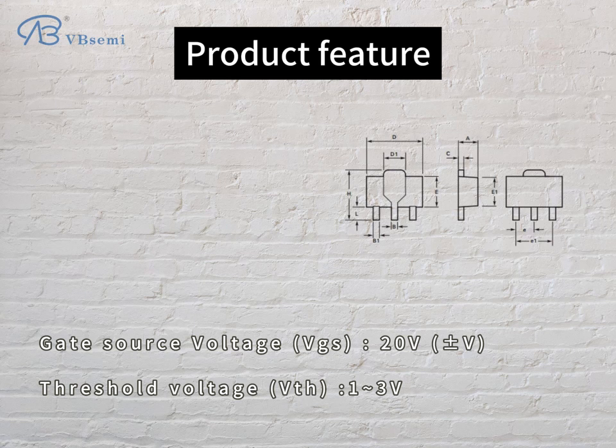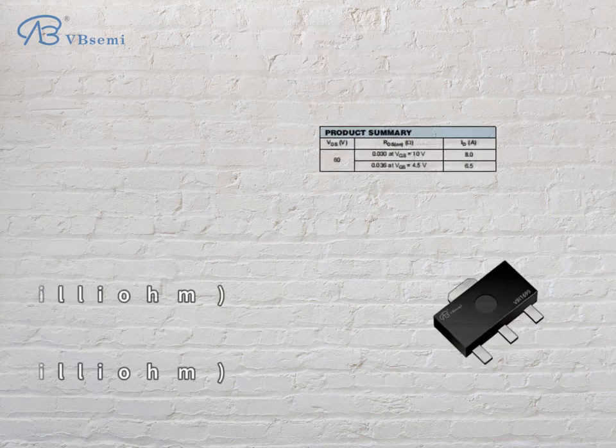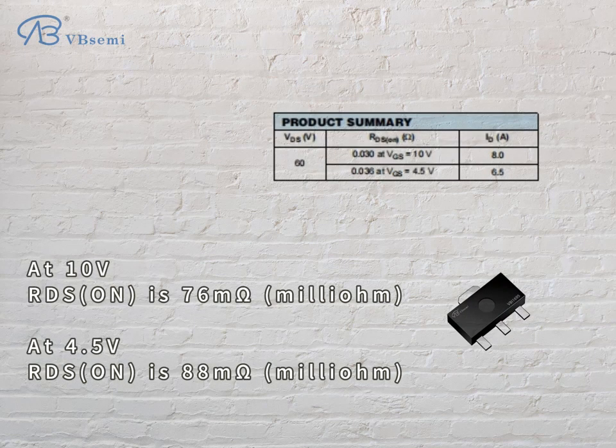Threshold voltage VTH is 1–3V. For RDS-ON parameters: at 10V, RDS-ON is 76 mΩ; at 4.5V, RDS-ON is 88 mΩ.